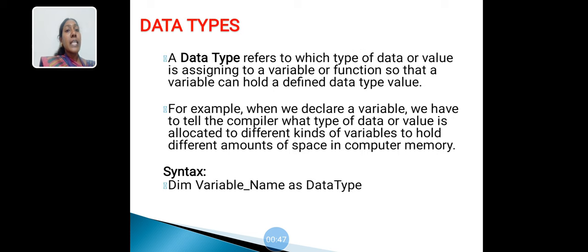A data type refers to which type of data or value is assigned to a variable or function, so that a variable can hold a defined data type value. For example, when we declare a variable, we have to tell the compiler what type of data or values is allocated to different kinds of variables to hold different amounts of space in computer memory.